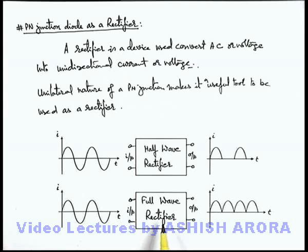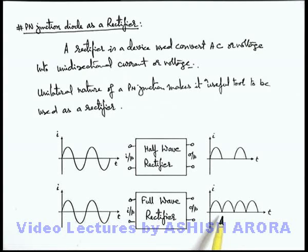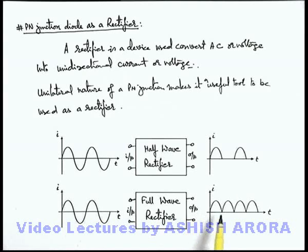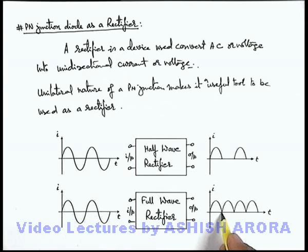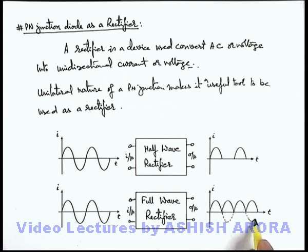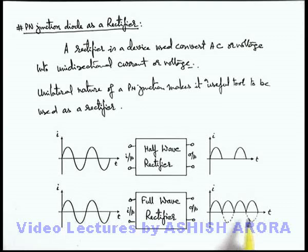Similarly, another rectifier is called a full wave rectifier, in which both positive and negative half cycles of the applied alternating current are supplied to the output terminal but in the same direction. The positive half cycle is supplied as it is, and the negative half cycle is inverted. The magnitude of current in the output terminal remains the same as that of the input terminal, but the direction is changed for the negative half cycle. So all negative half cycles are inverted in the output of a full wave rectifier, where current flows for the whole cycle but only in one direction.